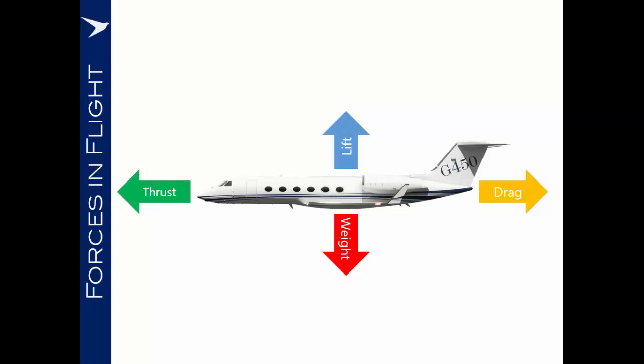Whilst the aeroplane is in straight, level, unaccelerated flight, these forces will all be in equilibrium, so thrust will equal drag, lift will equal weight, and the aeroplane will not speed up, slow down, or manoeuvre other than to fly in a straight line at a constant speed.